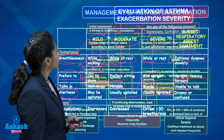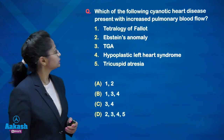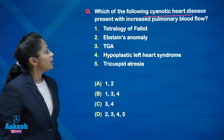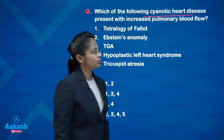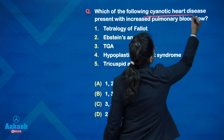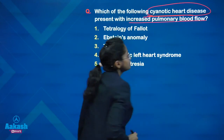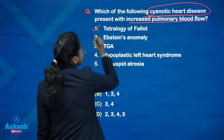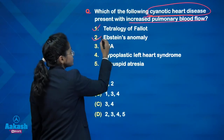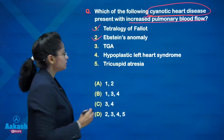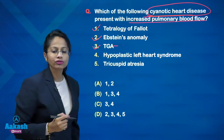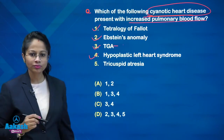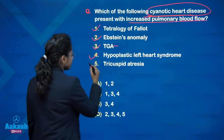Bronchial asthma is a very important topic from the exam point of view — a large number of questions are asked from this topic. Now the next question: which of the following cyanotic heart diseases present with increased pulmonary blood flow?